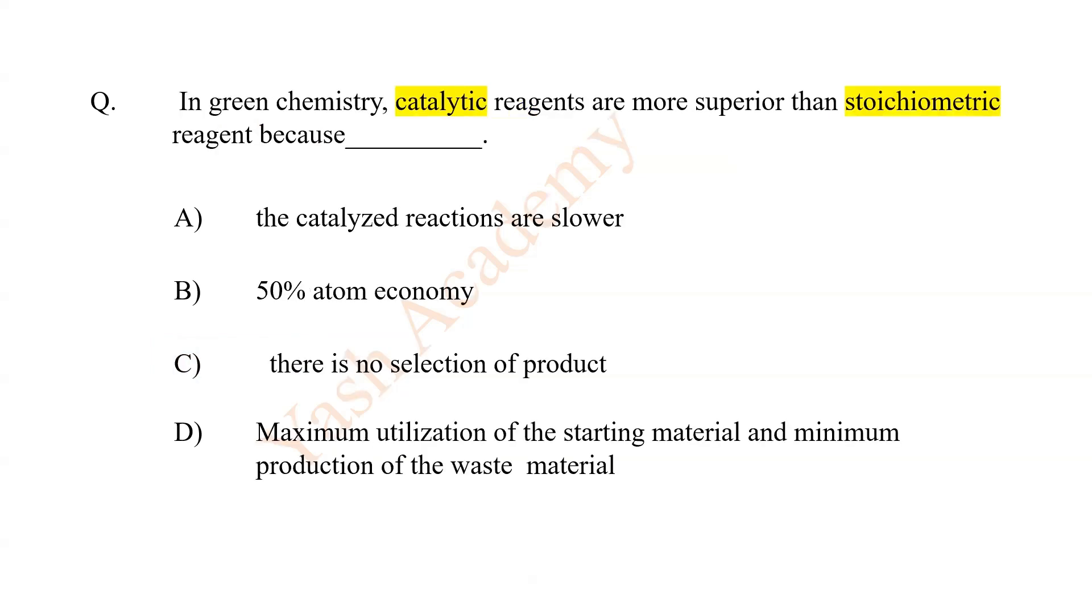In green chemistry, catalytic reagents are more superior than stoichiometric reagents because D. Maximum utilization of the starting material and minimum production of the waste material.